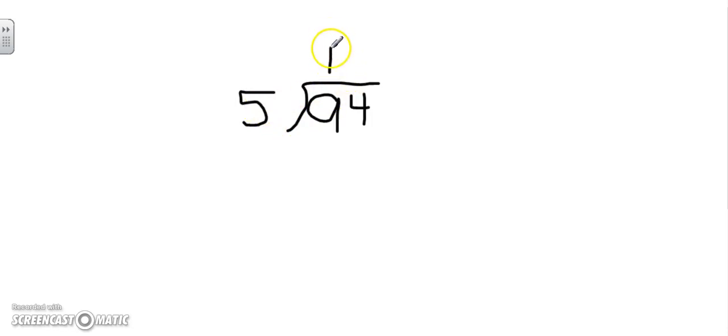My next step is to multiply. 1 ten times 5 is 50. I had 9 tens to divide. I was able to divide 5 tens or 50 of them, so I subtract. 94 minus 50 is 44.